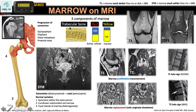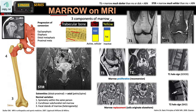Today we're going to talk about marrow on MRI. We have three components of the marrow: the trabecular bone or bony housing, which provides structural framework and integrity and stores minerals, and then the red and yellow marrow. There is a difference in composition — red marrow contains roughly equal amounts of water and fat, while yellow marrow contains more fat than water.